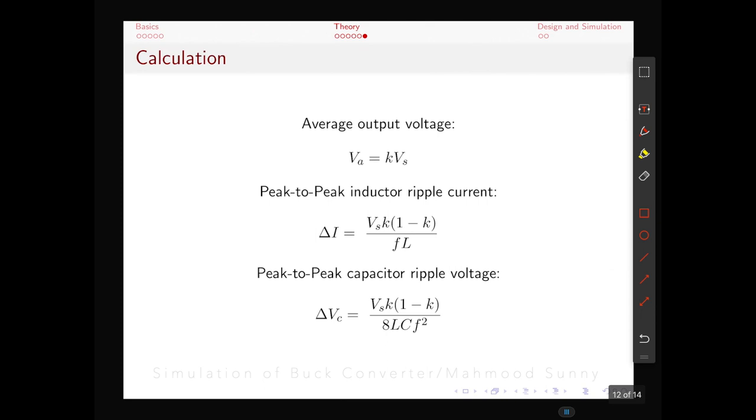For the buck converter our average output voltage is expressed by Va which depends on the supply voltage and the duty ratio. For example if our supply voltage is 12 volt and we want 6 volt for our output, then the duty ratio has to be 50% or 0.5. The peak to peak inductor ripple current delta I is expressed by Vs multiplied by K multiplied by 1 minus K divided by the switching frequency F multiplied by the value of the inductor.